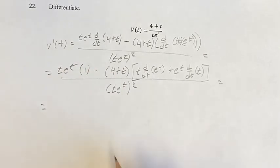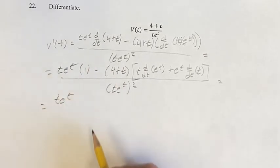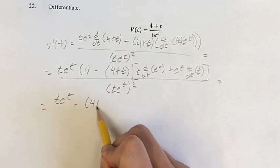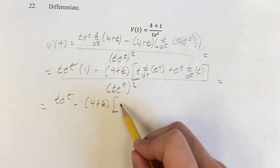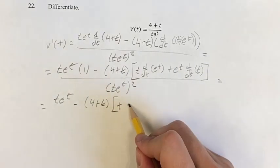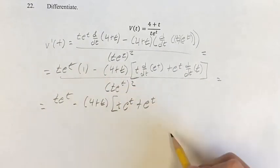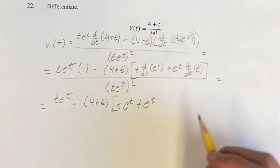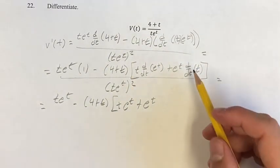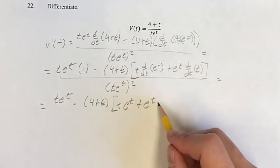So simplifying this, t e to the t times 1 is just itself, minus 4 plus t times t times the derivative of e to the t, which is just e to the t, plus e to the t times the derivative of t. Again, linear term, its derivative is just going to be its coefficient, which in this case is 1.